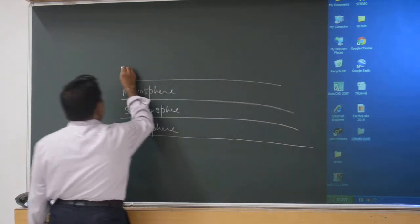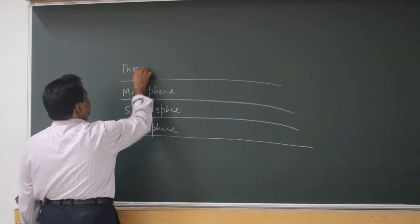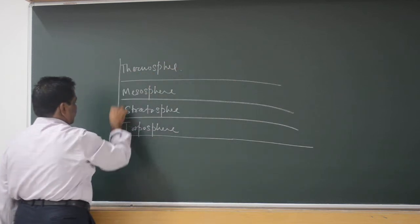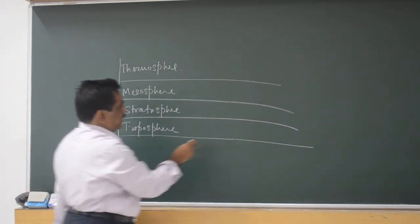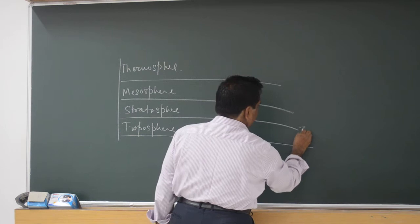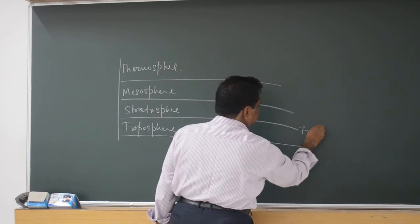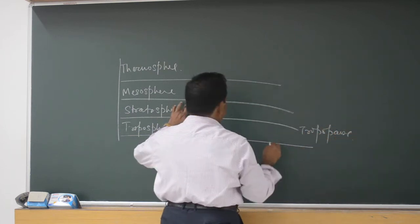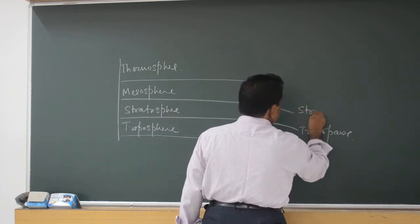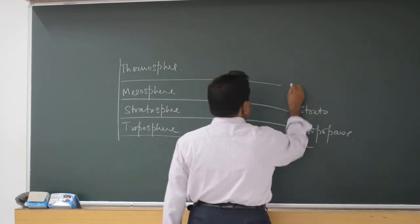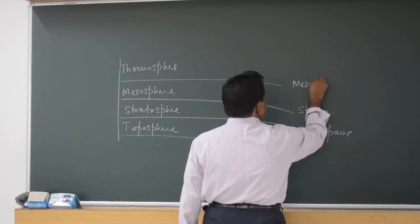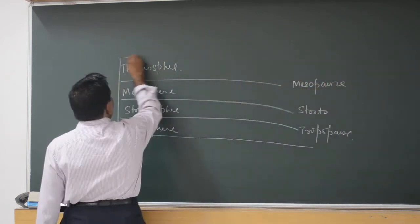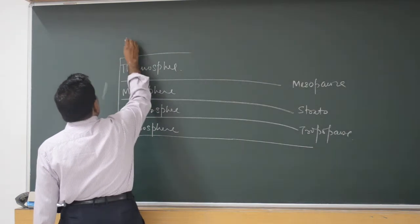Thermosphere. So this break is known as the Tropopause. Then this is the Stratopause. Then this is the Mesopause. Then Thermopause. Followed by Exopause — these are the names of the boundaries between each atmospheric layer.